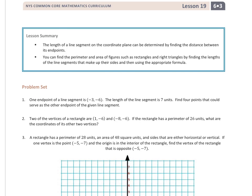Hello everyone, this is Grade 6, Module 3, Lesson 19, Problem Set. Let's take a look at number 1. It says one endpoint of a line segment is negative 3, negative 6. The length of the line segment is 7 units. Find four points that can serve as the other endpoint of the given line segment.